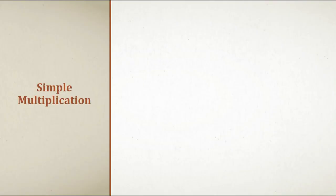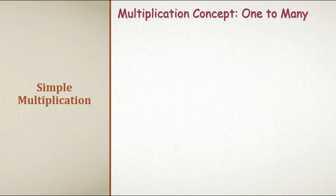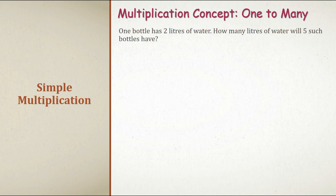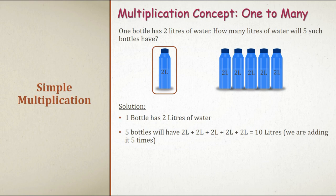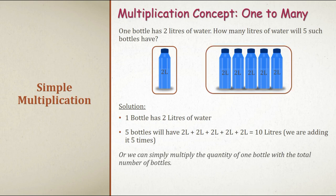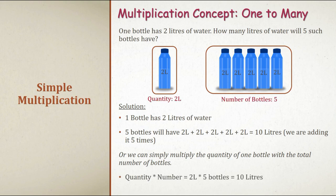Simple multiplication. Multiplication concept is basically one to many. Let's take an example. If one bottle has two liters of water, how many liters of water will five such bottles have? There is one bottle of two liters and we need to find the quantity in five such bottles.